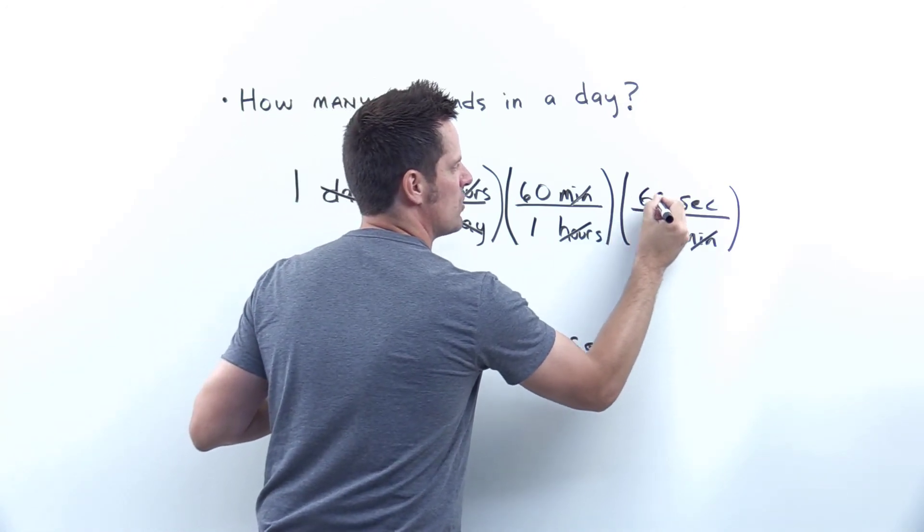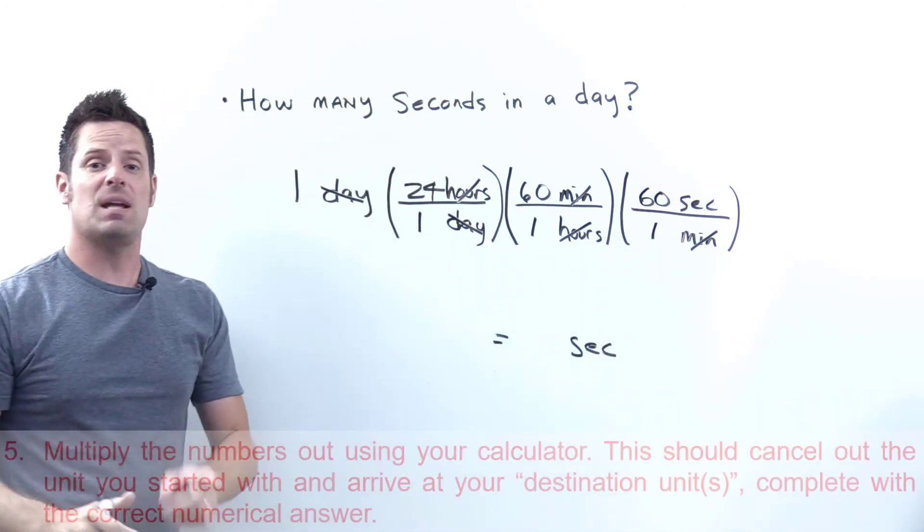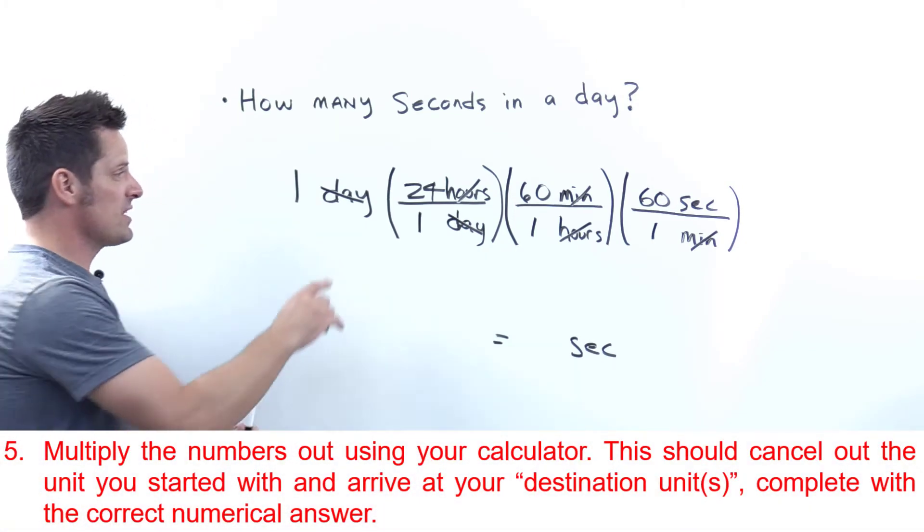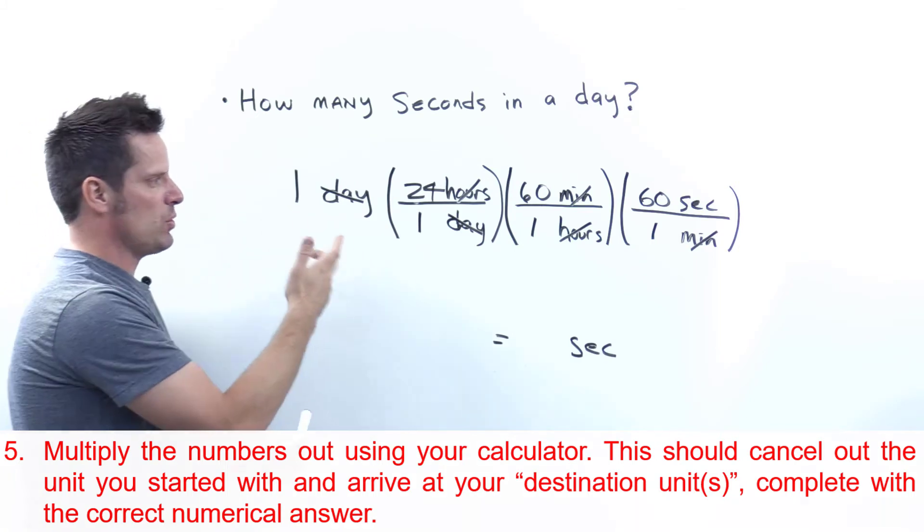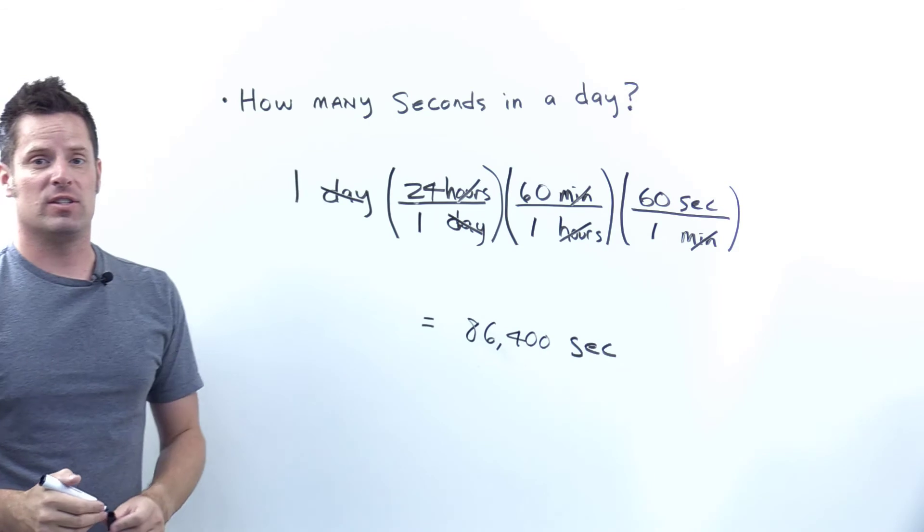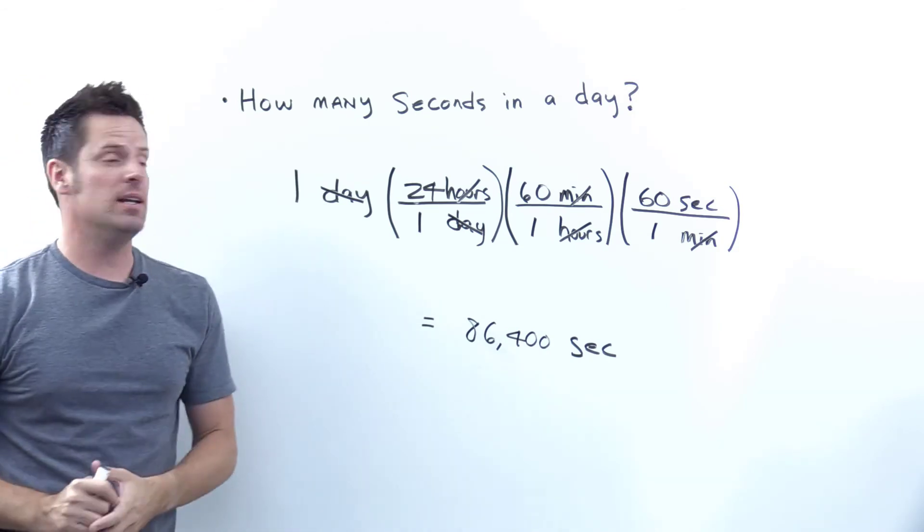There are 60. So those are my numbers and I'm now done with step 4. Step 5 is multiply them all out on your calculator. When I multiply this all out, 24 times 1 is 24, times 60, times 60, I end up getting 86,400. So that's how many seconds there are in one day.